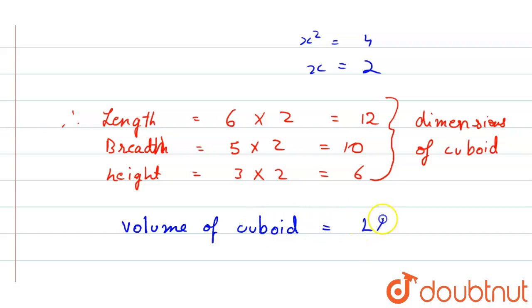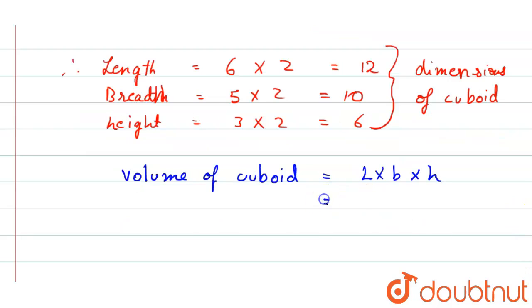that is length into breadth into height. So we put the values: length we have as 12 into breadth that is 10 into height that is 6, that equals 720 centimeter cube. So this will be the answer for this question.